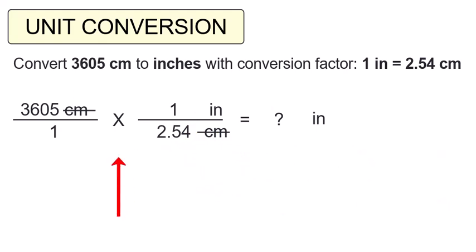Last step, multiply through and get our result. 3,605 over 1 times 1 over 2.54 equals 1,419.29 inches.